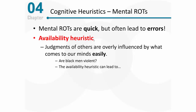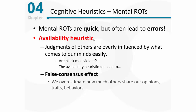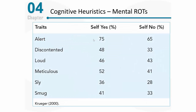One thing that the availability heuristic can lead to is something that we call the false consensus effect. The false consensus effect states that we tend to overestimate how much other people share our own opinions, traits, and behaviors. Imagine that I take some type of survey asking me a variety of questions regarding my traits — personality characteristics or behaviors that I engage in. There would be some things that I would say describe me, and we compare that with other people who say those traits don't describe them.